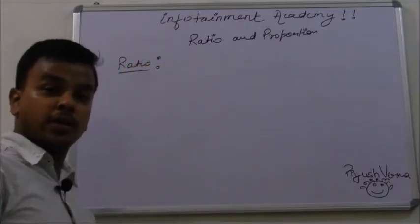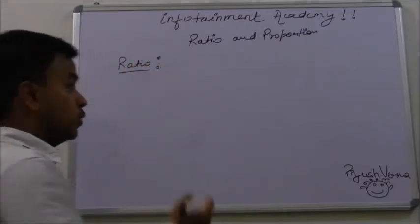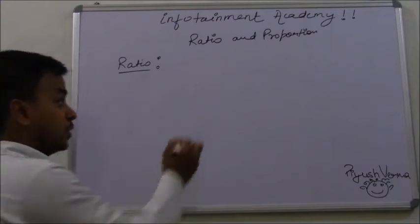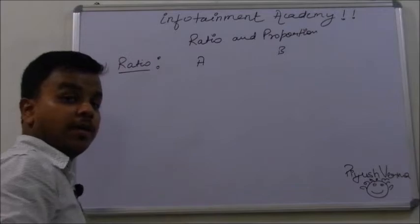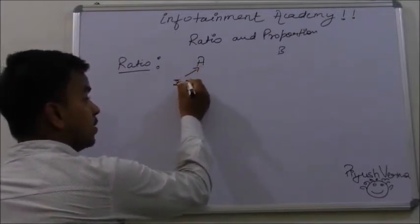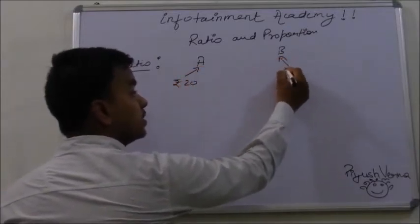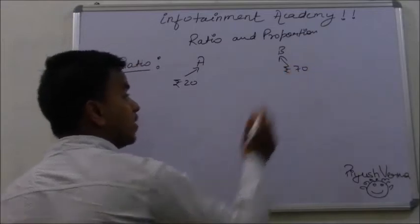To understand more clearly, let us take an example of a ratio. I am having two persons, person A and person B, and they are having rupees 20 and rupees 70 respectively.